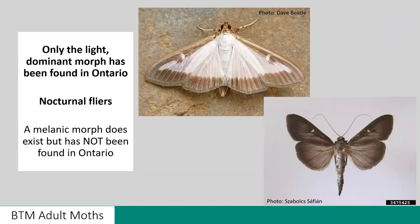For the adult stage, we have only found the dominant light morph here in Ontario, which is shown in the top photo. I just want everyone to be aware that there is a melanic morph — a solid brown colour — that is present in both Asia and Europe, but has not been found here in Ontario. If you are keeping an eye out for these, the moths are nocturnal flyers, so you're going to see them more commonly flying at dawn and dusk.